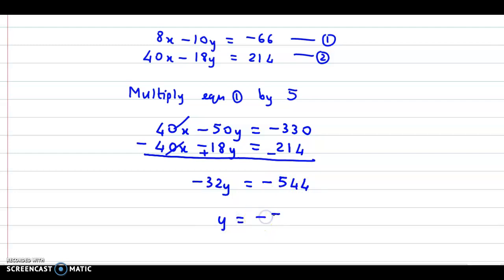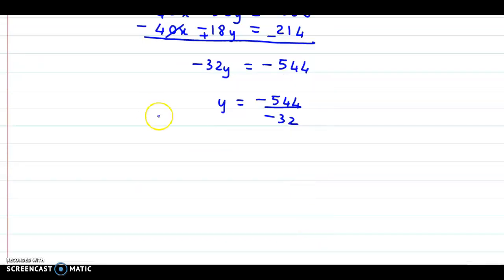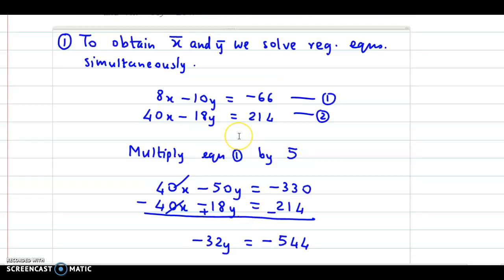40x cancels. The difference is minus 32y and this would be minus 544. So from here we get Y's value as minus 544 divided by minus 32. If we perform this division, we get the answer for y as 17.